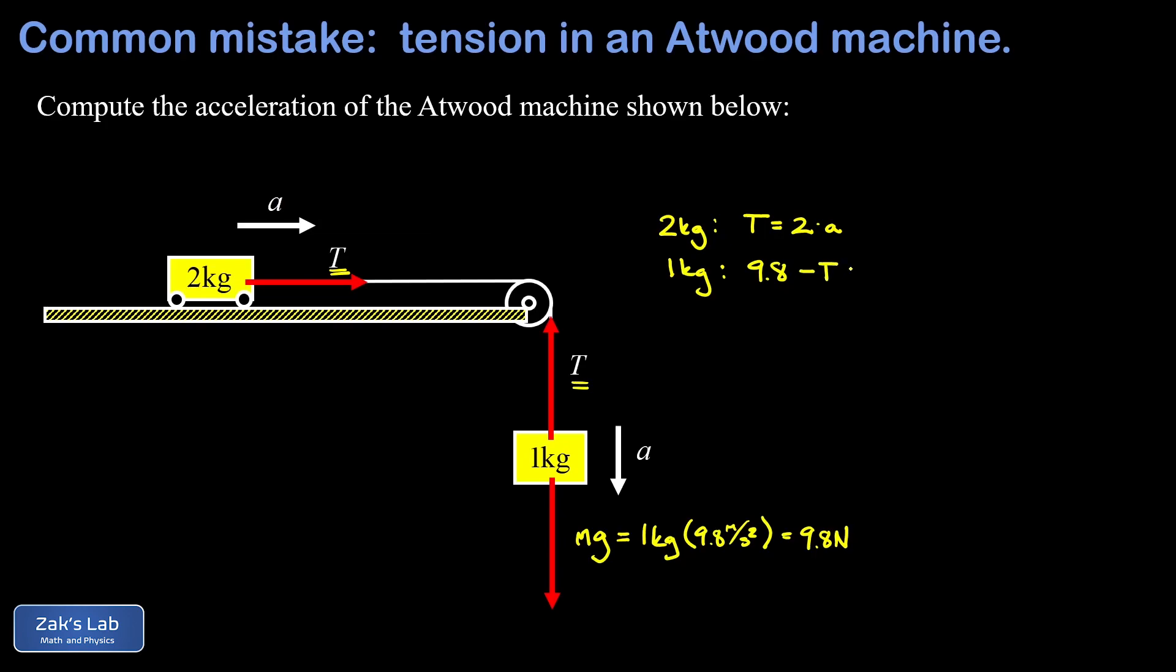And the T pointing up, we call negative. So there's the net force on the one kilogram mass. And that's equal to the mass itself, which is just one multiplied by the acceleration.